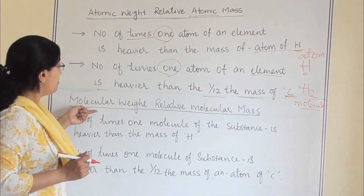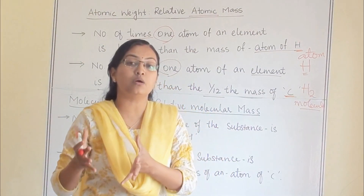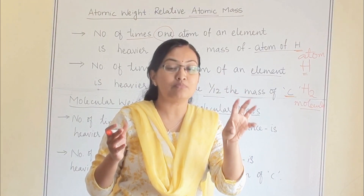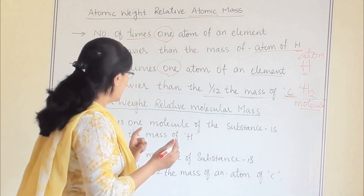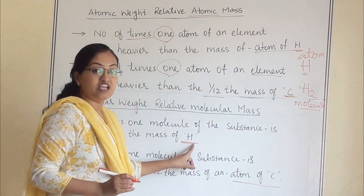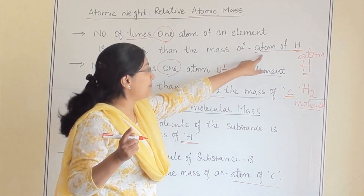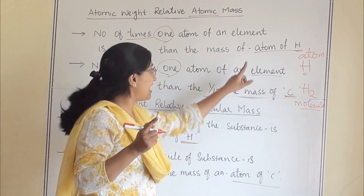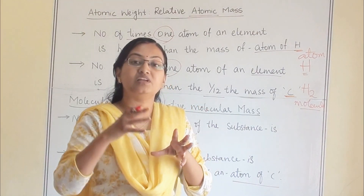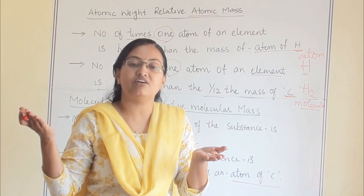Now we are going to see molecular weight and relative molecular mass. The same way we compared atoms, we are going to compare molecules. For any particular molecule, how much is its mass compared to one atom of hydrogen? Here again, the reference is the mass of a hydrogen atom and the mass of a carbon atom — we are taking atoms only as the reference, not molecules of hydrogen or carbon. Both relative molecular mass and relative atomic mass are compared against the atom of hydrogen and the atom of carbon.